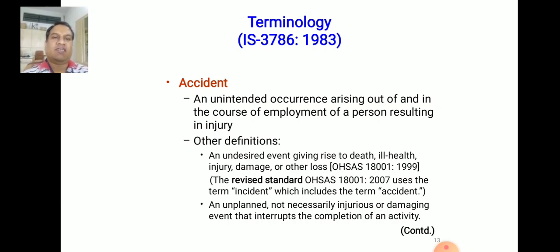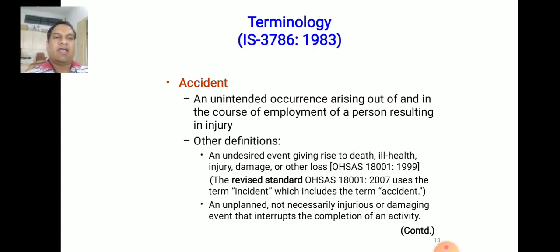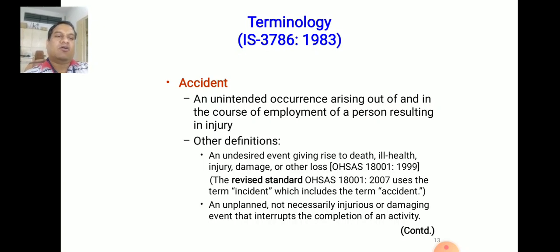The definition of accident in IS 3786 is: an unintended occurrence arising out of and in the course of employment of a person resulting in injury. OHSAS 18001-1999 defines it as: an undesired event giving rise to death, ill health, injury, damage, or other loss. The revised OHSAS 18001-2007 uses the term 'incident' which includes the term 'accidents.'